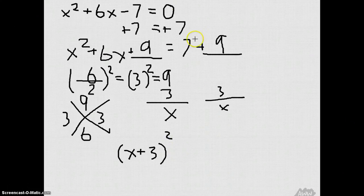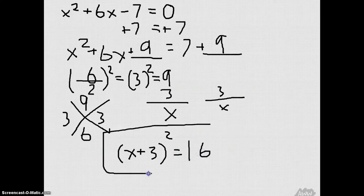And now 7 plus 9 equals 16. So (x + 3) squared equals 16, and that's the complete square. Oh snaps, how we upload?